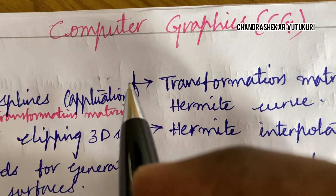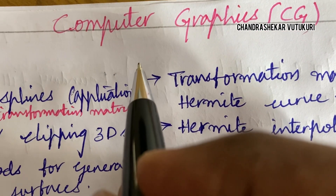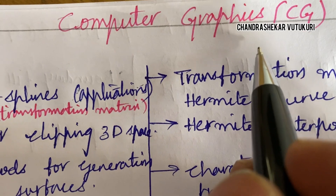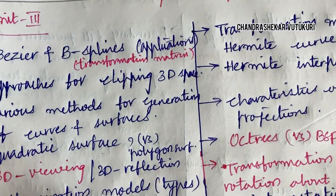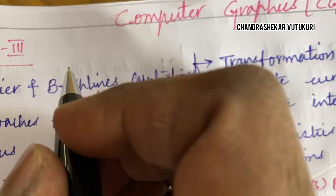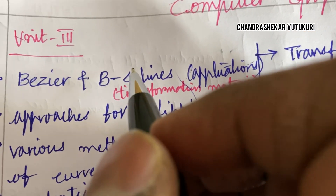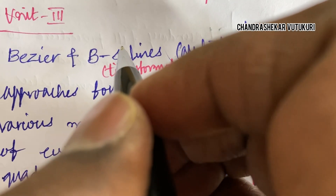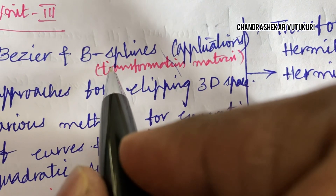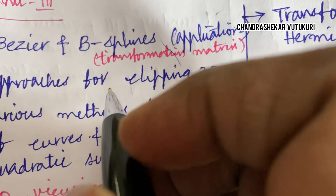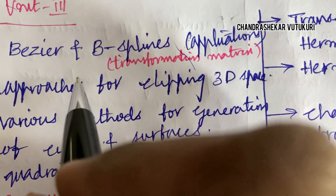Welcome back students. This video covers the important questions for the course Computer Graphics, units 3, 4, and 5. I have posted earlier the part 1 video on unit 1 and unit 2, and this covers units 3 to 5 important questions. As you have less time, please work out whichever questions I am highlighting here — these are sure for tomorrow's examination.